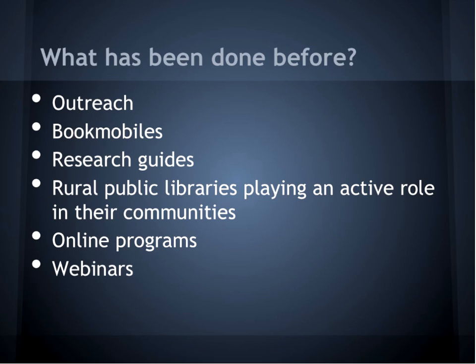Thanks, Elizabeth. In this section of our presentation, I'm going to talk about what's already been done to ease the transition to college for low-income and rural students. Broadly speaking, libraries have been involved in many different forms of outreach. These include public libraries playing an active role in their communities through programs that get people using the library, such as bookmobiles. It also includes digital resources — informing patrons online about how the library can help them through research guides and webinars, to name just a few examples.